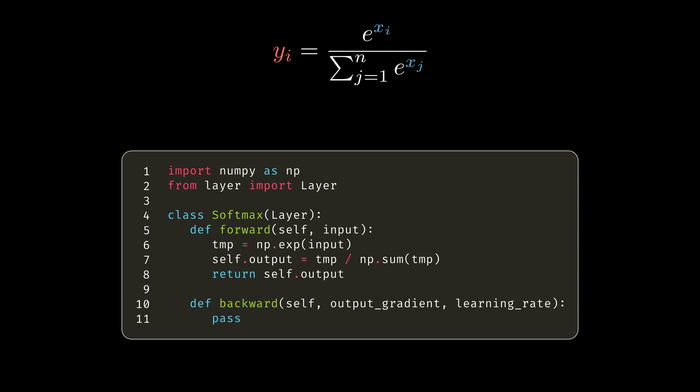Now, on to the meat of the problem. How do we compute the backward step? Remember, the framework is always the same. We are given a vector containing the derivatives of the error with respect to the output. And we need to return a vector containing the derivatives of the error with respect to the input.